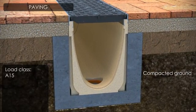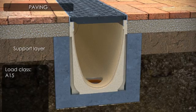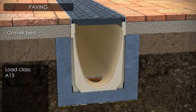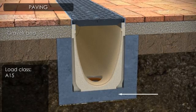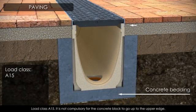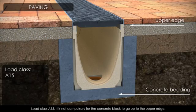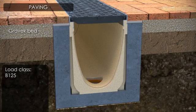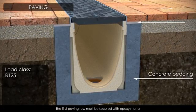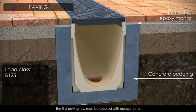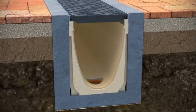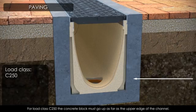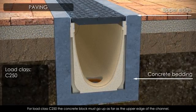With paving, there are three options depending on the load class. For load class A15, it is not compulsory for the concrete bedding to be installed up to the upper edge of the channel. For load class B125, the first paving row must be secured with epoxy mortar to ensure adherence. For load class C250, the concrete block must be installed up to the upper edge of the channel.